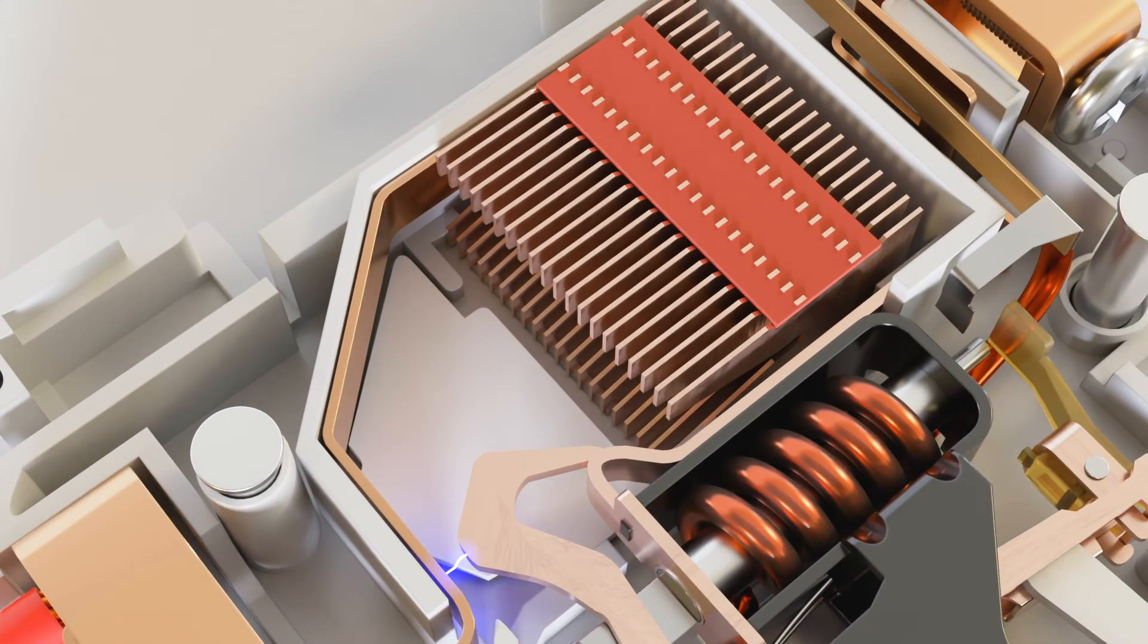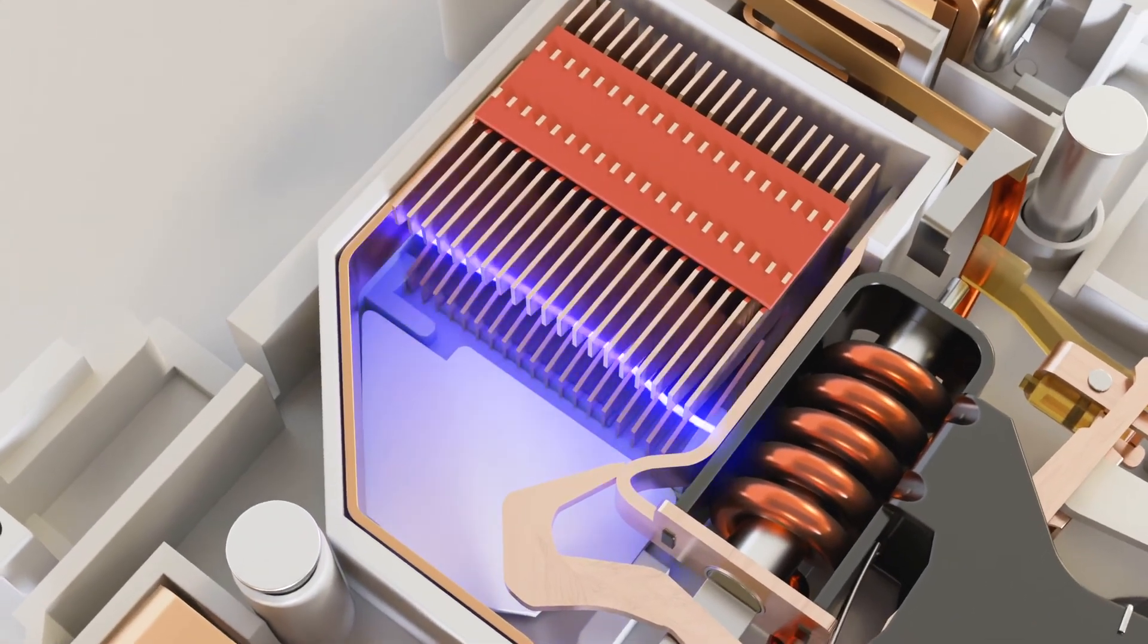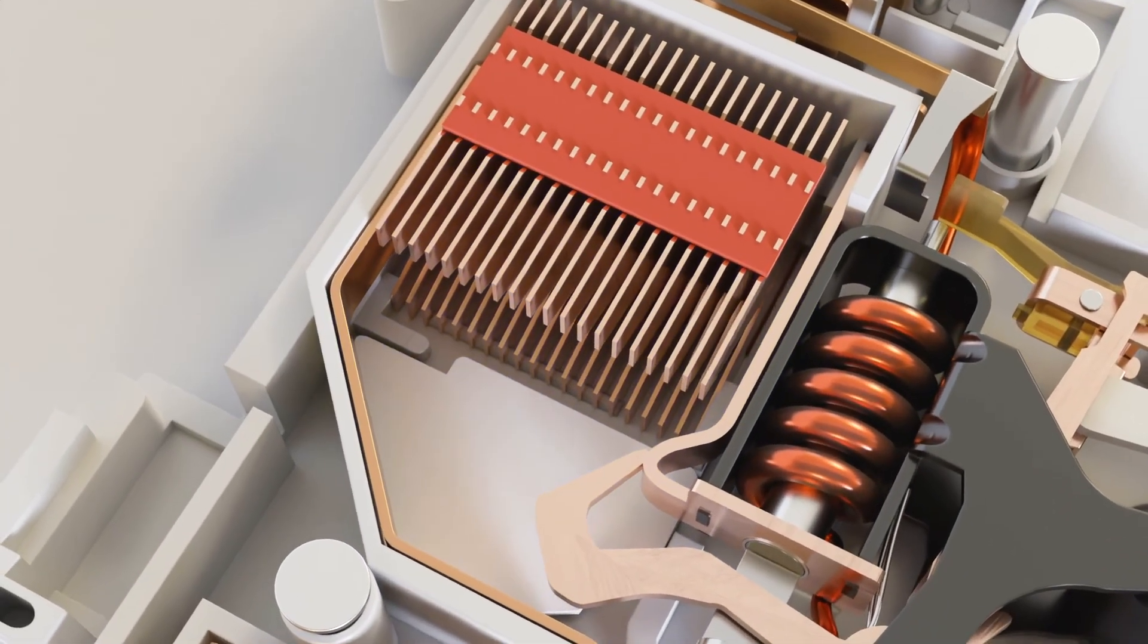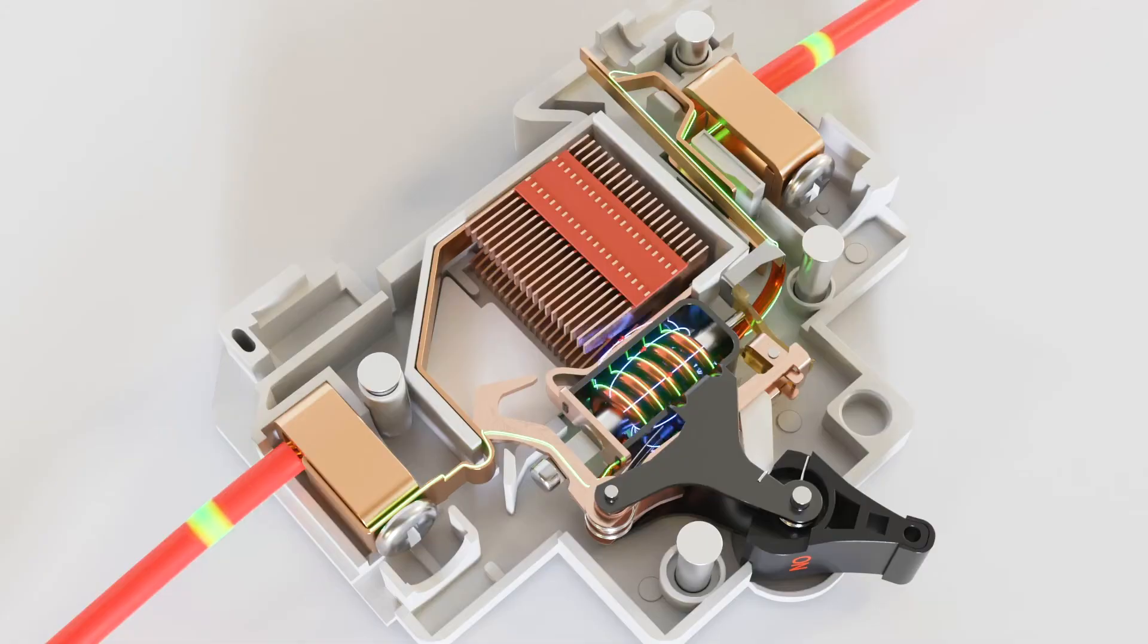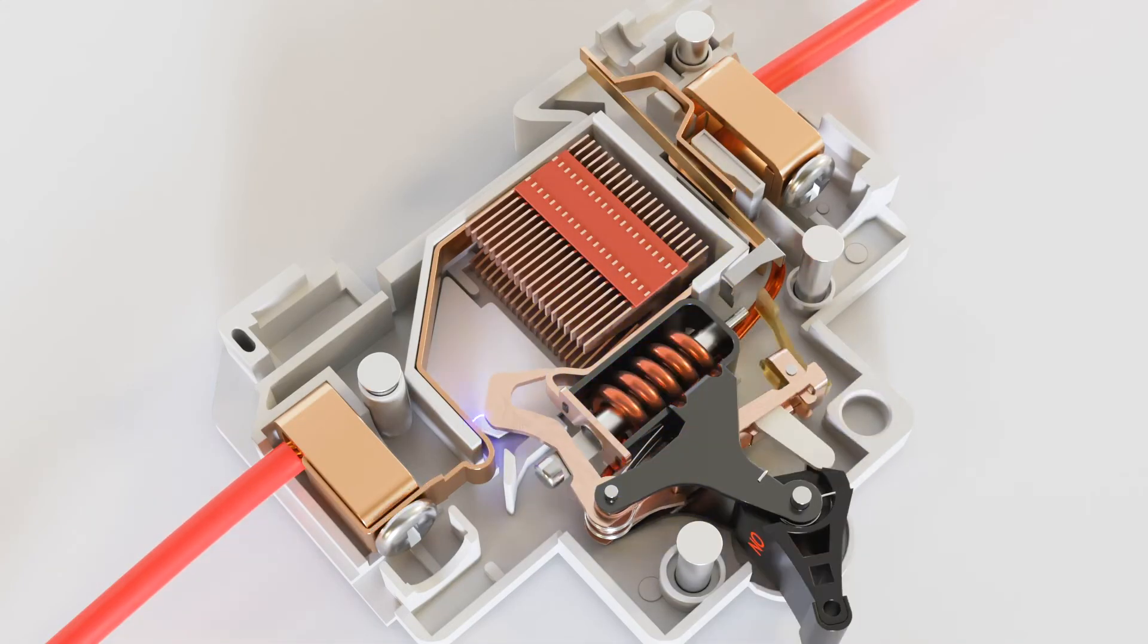To solve this issue, we use a component called an arc chamber. An arc chamber is designed to split this arc into smaller pieces so that the energy of arc can safely dissipate. And that's how a MCB protects an electrical system from short circuit.